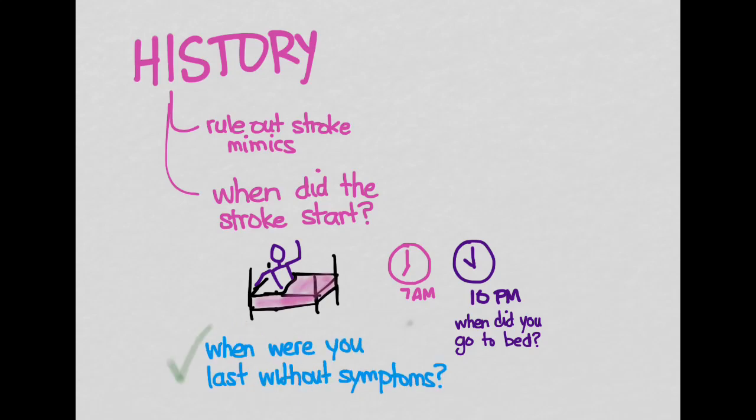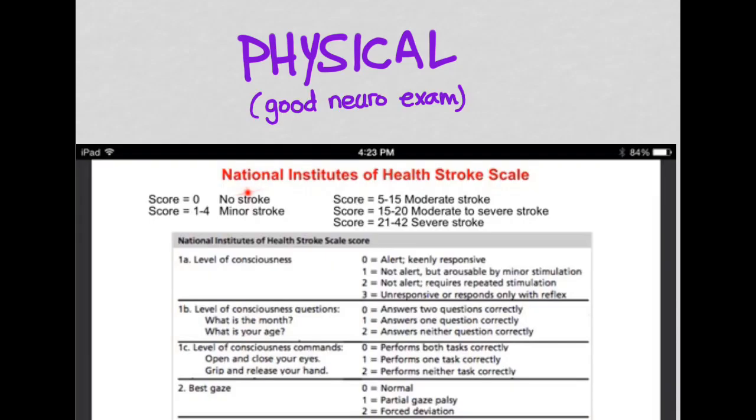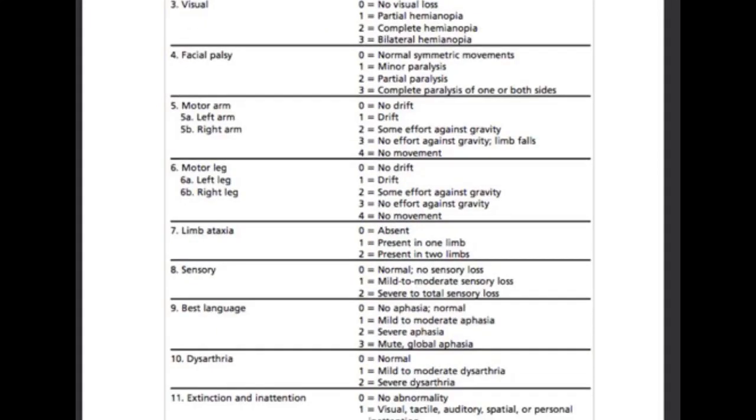Now let's move on to the physical exam. Of course, you're going to do a good neuro exam. That good neuro exam should include an assessment of the patient's NIH stroke scale. This is a scale that goes from 0 to 42 and measures how severe the stroke is, with 0 being no stroke, 1 to 4 being minor, and progressing through moderate all the way through a severe stroke. You measure all kinds of things like level of consciousness, best gaze, and the scores go from anywhere from 0 to 1 to 2, all the way to 0, 1 to 4. There are a lot of things to remember on this exam.